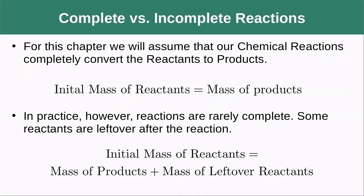For this chapter, we're going to assume that our chemical reactions completely convert to products. That will make our lives a lot easier. In this case, the initial mass of the reactants is going to equal the mass of the products. In practice, though, reactions really don't go all the way to completion. You always wind up with at least some of the reactants left over. In this case, the initial mass of the reactants equals the mass of the products plus the mass of the leftover reactants that didn't react.